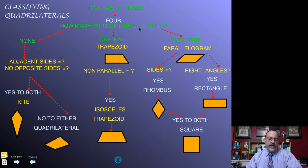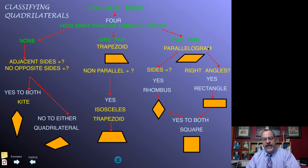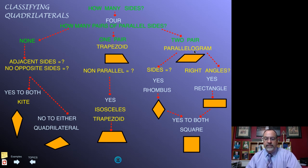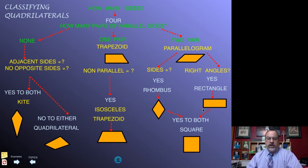If both pairs of opposite sides are parallel, then we have a parallelogram. We have additional questions to ask to classify it further. We look at the sides and ask: are all the sides congruent? If yes, it's a rhombus. If no, it remains a parallelogram. Then we ask: are there right angles — are all the angles right angles? If yes, it's a rectangle. If no, it remains a parallelogram. If we answer yes to both — all four sides congruent and all four angles are right angles — it becomes a square.